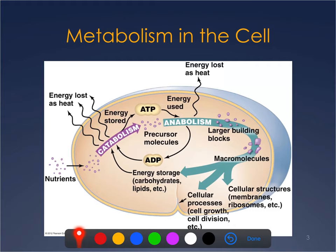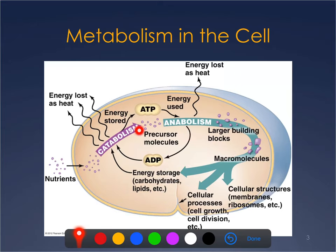Catabolism takes energy storage — carbohydrates, lipids, proteins — and breaks them down, releasing stored energy which is captured in the form of ATP. It also releases precursor molecules, which are the building blocks. Without catabolism there can be no anabolism, and vice versa.